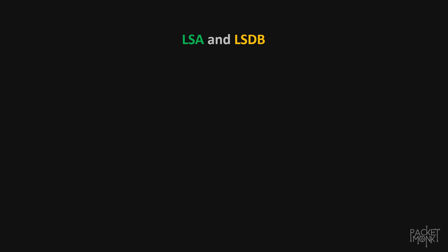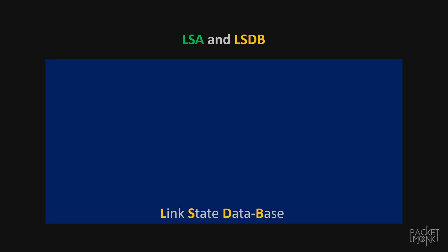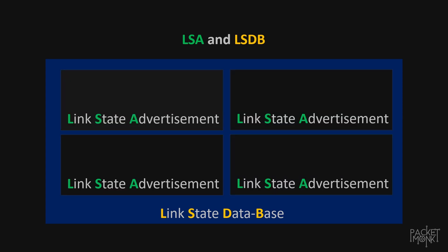Now we are going to take a look at what is LSA and LSDB. The link-state database is a table which each OSPF router maintains, and this table will be filled with link-state advertisements or LSAs. Inside these LSAs there will be link states which contain the details of each link participating in OSPF. In summary, the OSPF database contains LSAs and each LSA has information about the network.